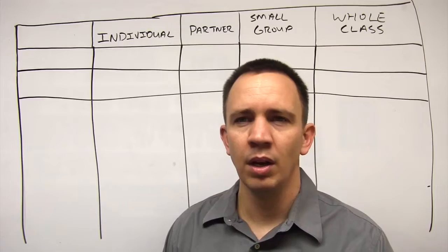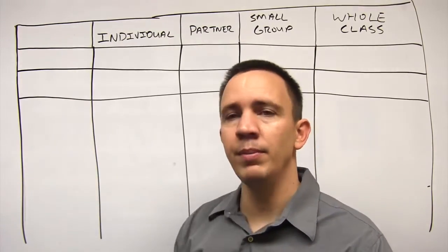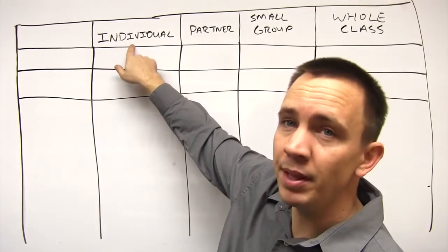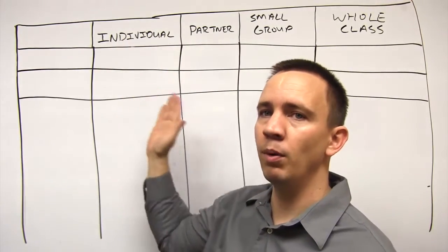I bring the students into this process as well. From there, we take the most common questions and put them into a procedure grid. The procedure grid divides up all the groupings we have: individual, partner, small group, and whole class.